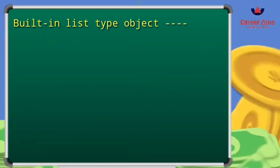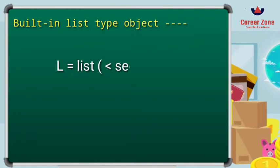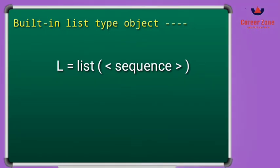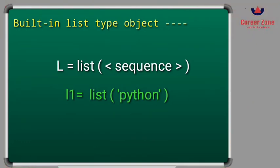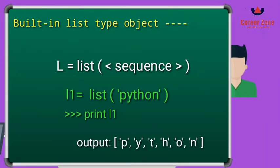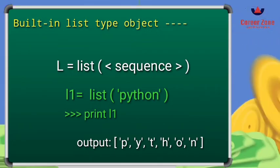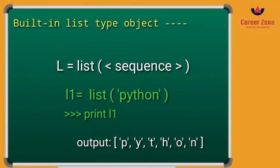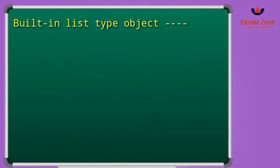Now let us see how we can create a list from an existing sequence. An existing sequence is a built-in list type object already available in Python's library. The object can include tuples, lists, or strings. For example, if I write l1 = list('Python'), I have not defined individual elements — only the string 'Python'. When I print l1, it generates individual elements from each letter: p, y, t, h, o, n.